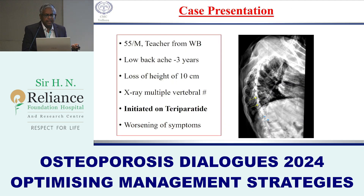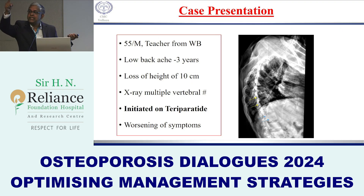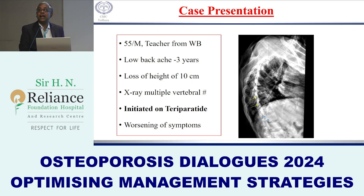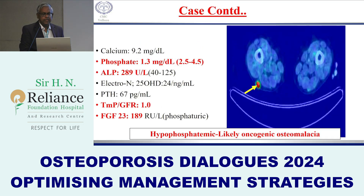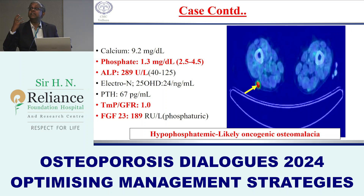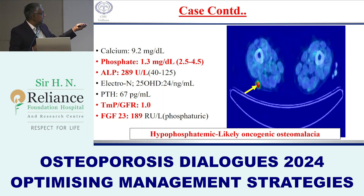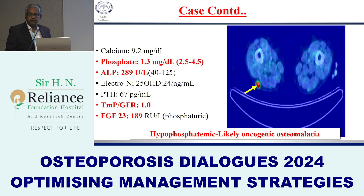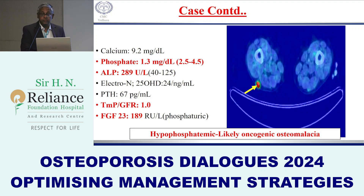Case 4: A man with multiple vertebral fractures where fasting phosphate was not measured. He was started on teriparatide, but FGF23 was very high and a tumor on the lower limb was causing phosphate wasting. After excision of the tumor, the patient recovered. This again underscores the importance of checking fasting serum phosphate before attributing fractures to primary osteoporosis.